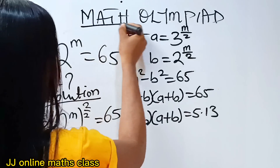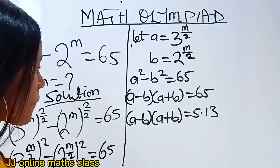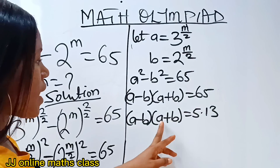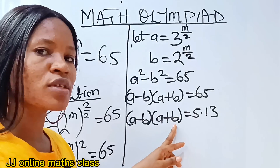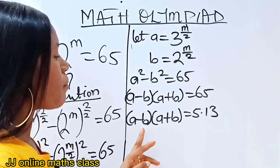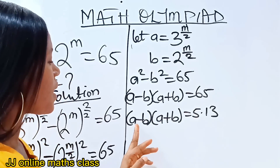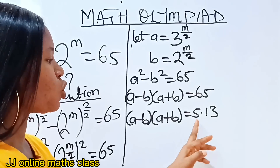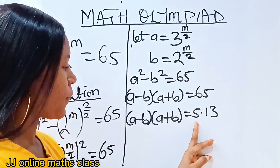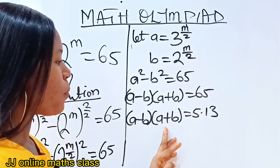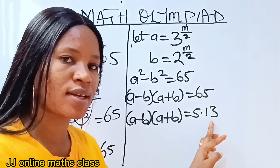Now when you look at this, you know that a plus b must be greater than a minus b. That means a minus b should be equal to the smaller number, while a plus b should be equal to 13.